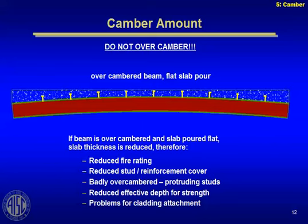Over-cambering is a bad situation. I've seen cases where the camber didn't come out and the studs were actually sticking out of the floor — an inspector will tell you that you don't have the fire rating you need because your stud is exposed. Worse yet, if instead of two plus four and a half inches of concrete you got two plus three or three and a half, you may not have the composite flange you thought, and you may not have the strength in your composite beam that you calculated. That's why I'd err on the side of cambering for 80% of the dead load.